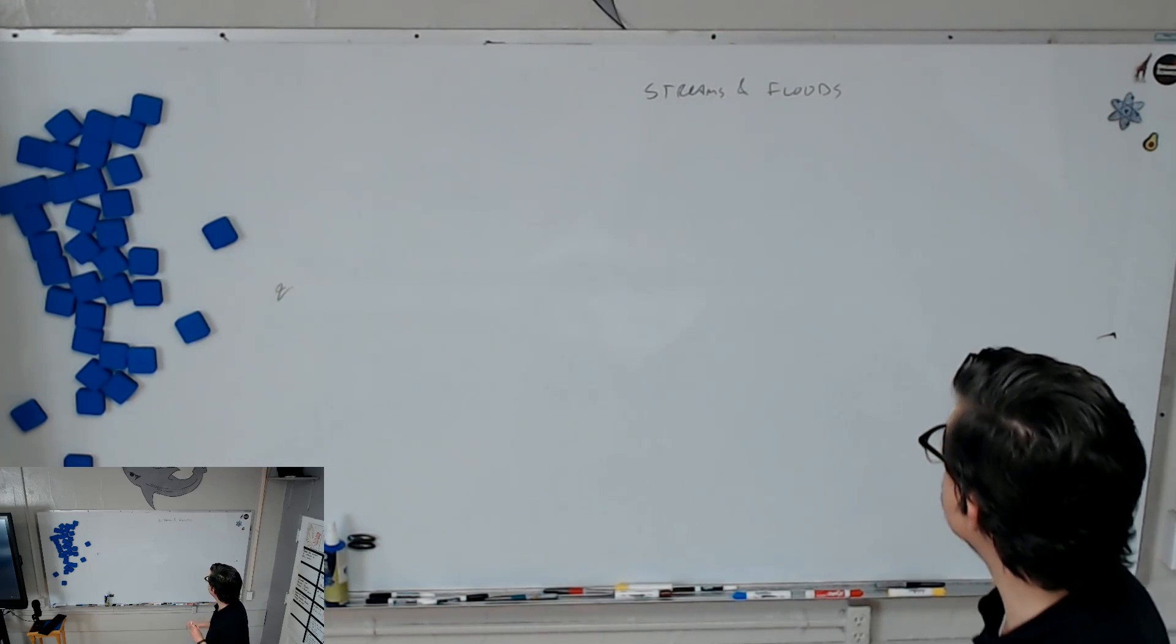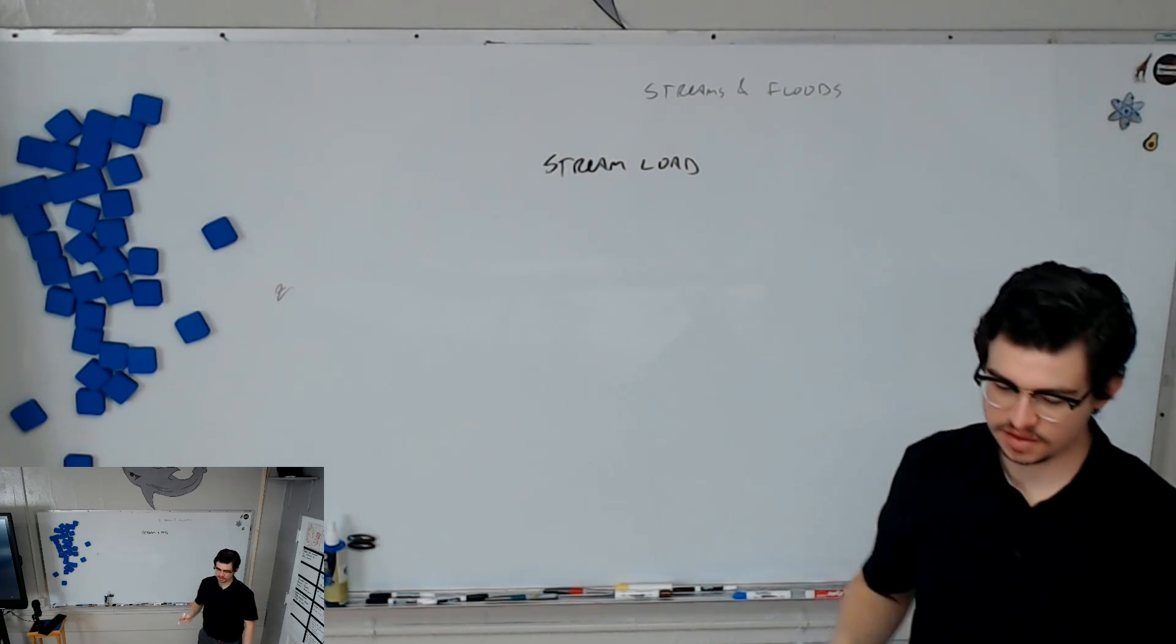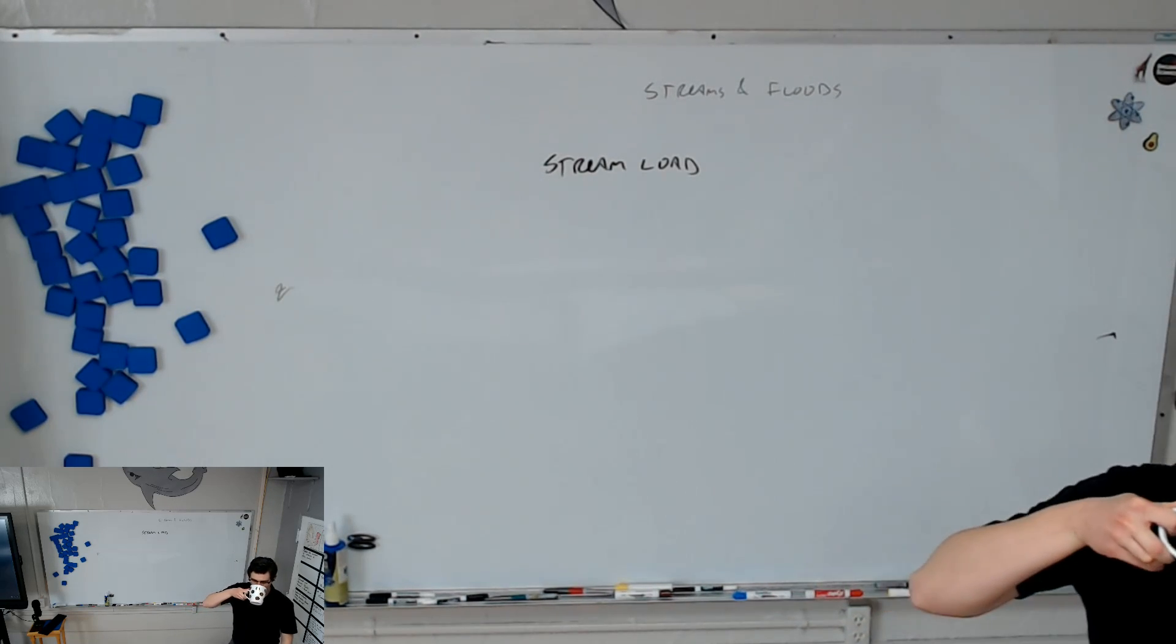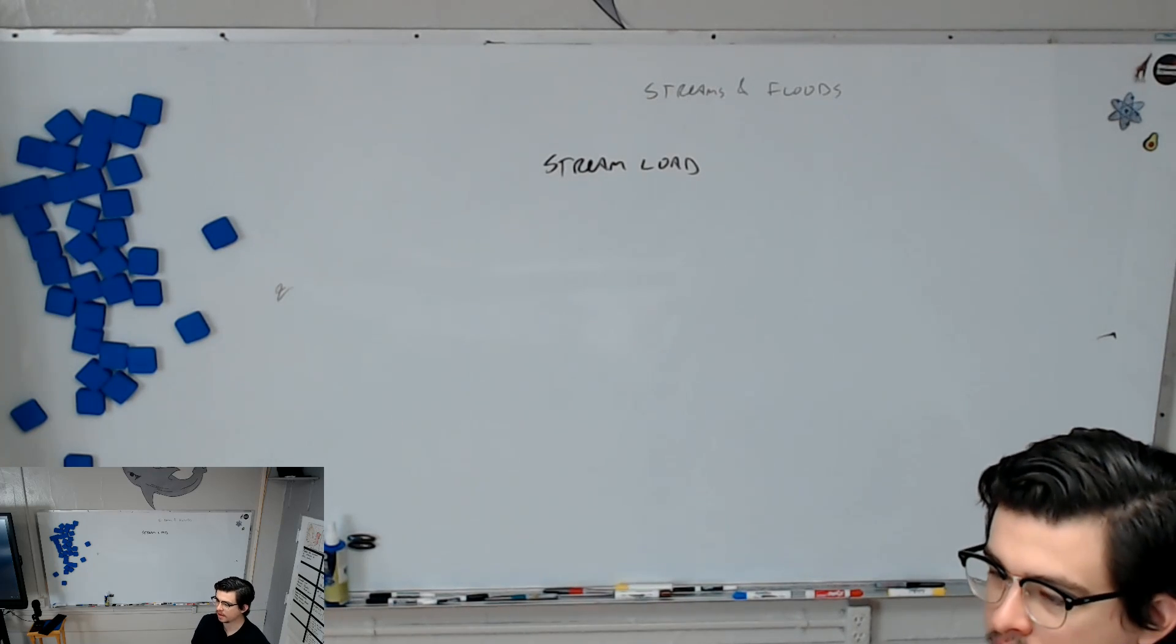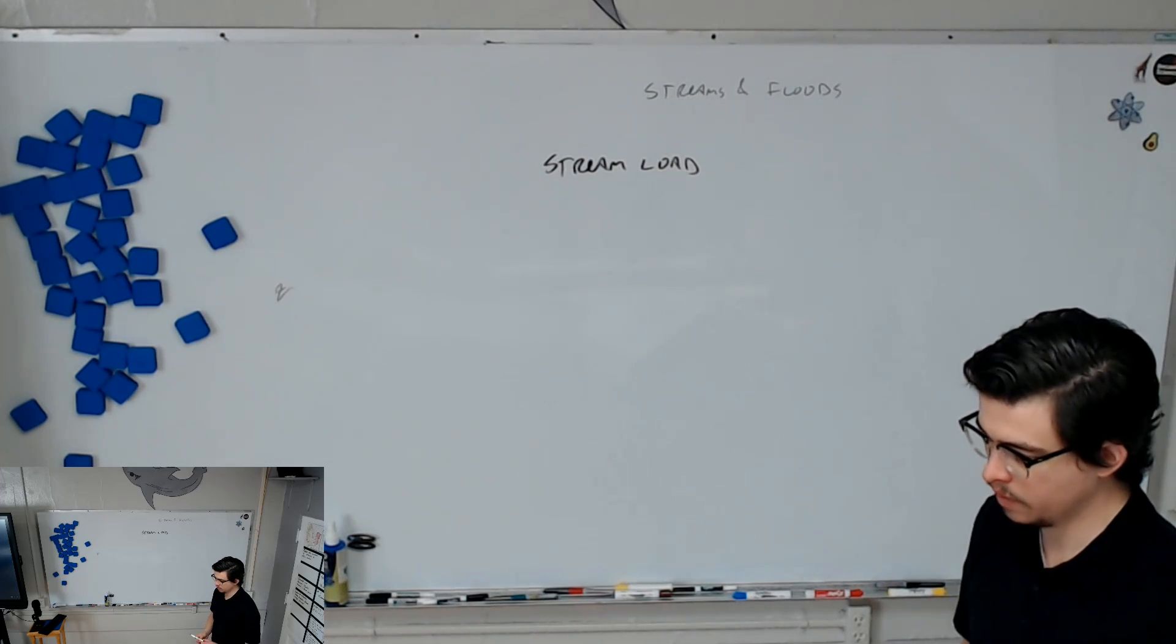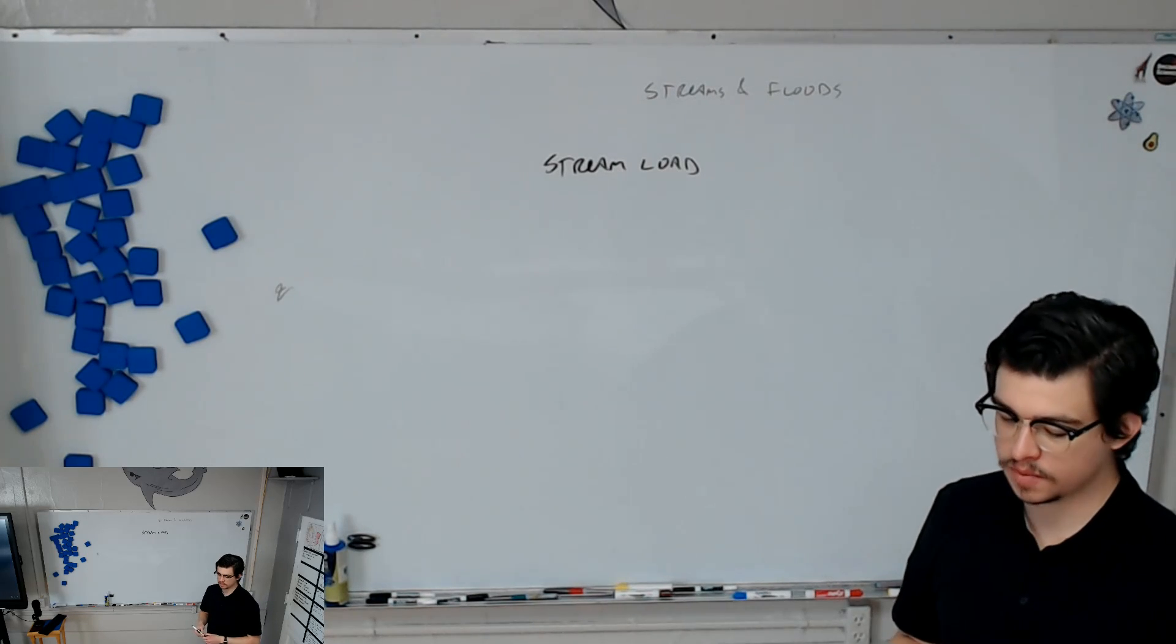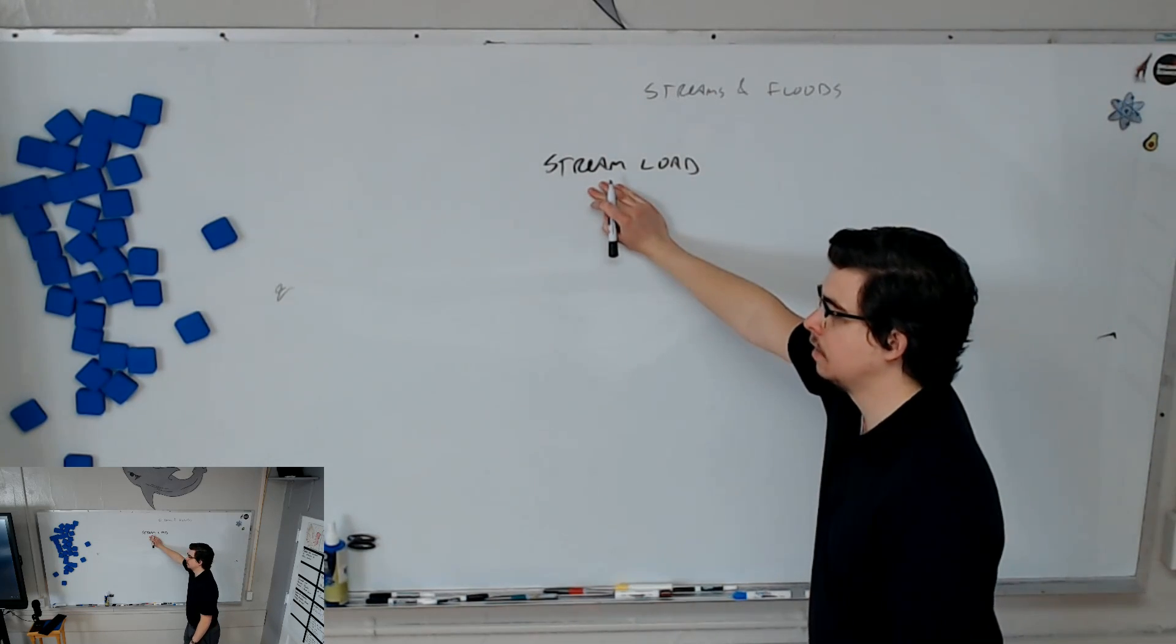So the first thing we're going to talk about is something called streamload. Well, first of all, before we talk about the thing I just said we're going to talk about first, what's a stream? It's a little river. It's a smaller version of a river. Yeah, really, that's as good a definition as that. It's a body of water that's moving. How does it move? Yeah, downhill. There's slightly more to it than that, but in general, almost all the time it moves downhill.